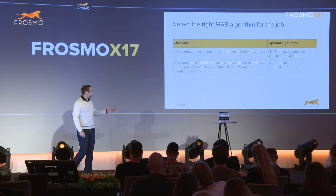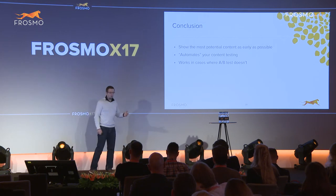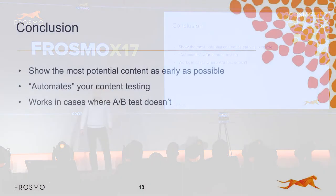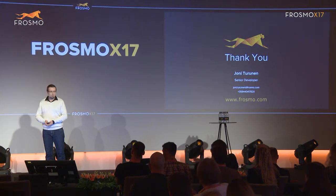That was about Frosmo Multi-Armed Bandit. To conclude: multi-armed bandit enables you to show the most potential content as early as possible, it automates your content testing fully, and it also works in cases where A/B testing just doesn't or can't work. Thank you everyone.